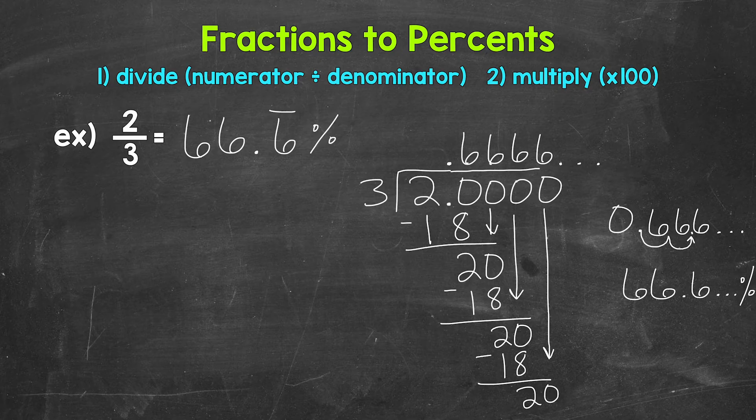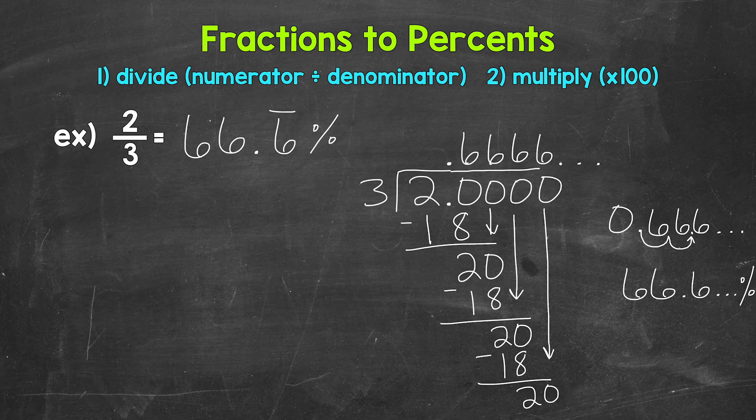And that's one way to write out a repeating decimal as a percent. Another option is to round. And for this example, we're going to round to the tenths place and then the nearest whole percent.